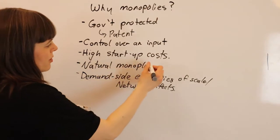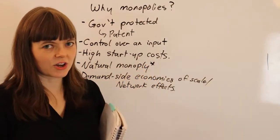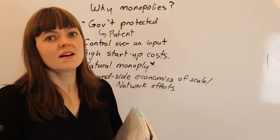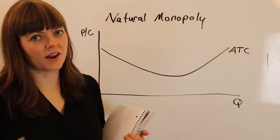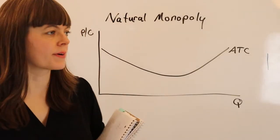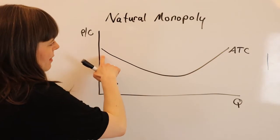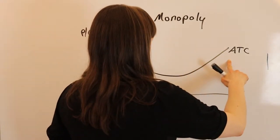Alright, so what about natural monopoly? How does this look? How do we interpret this on a graph? How do we think about it? Let's look at a graph. Alright, to think about why we might have natural monopolies, we think about the average total cost curve.